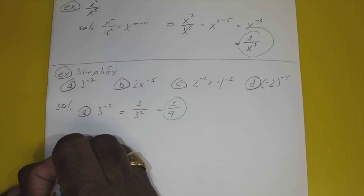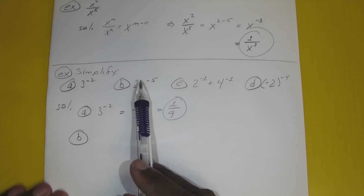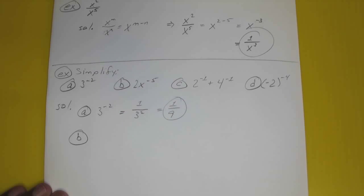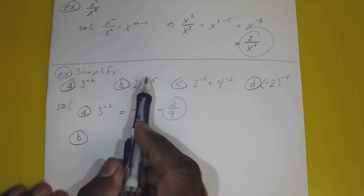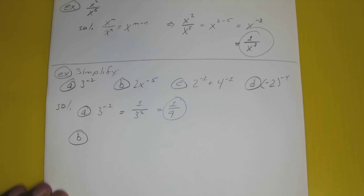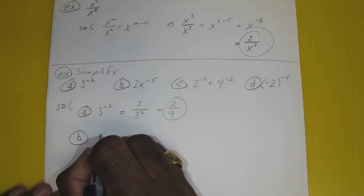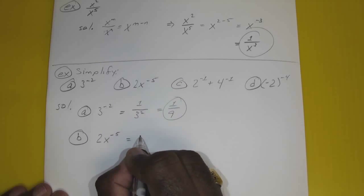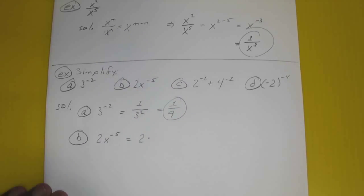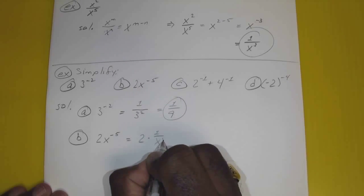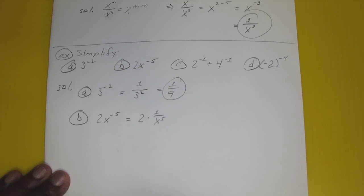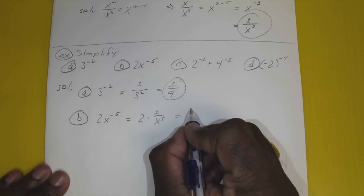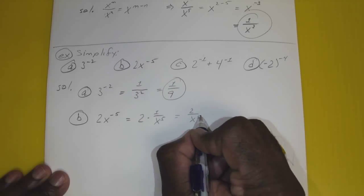For problem B, whenever you have a coefficient in front, remember the exponent only applies to what it's right next to. So that negative 5 exponent only applies to the x. 2 times x to the negative 5 equals 2 times 1 over x to the 5th, or written as a fraction: 2 over x to the 5th.